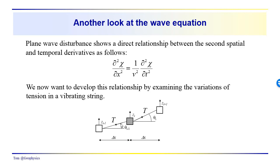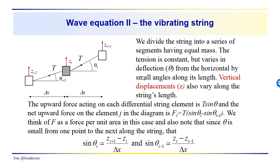If we look at the deflection of the string from the horizontal, that deflection makes an angle θᵢ₋₁ with the horizontal in one case and θᵢ with respect to the horizontal in another. This differential mass element is being pulled in the upward direction by tension to the right and in the downward direction by tension to the left. We divide this string up into a series of segments — they all have equal mass, and the tension is constant throughout the length of the string, but we have a variable deflection from the horizontal.